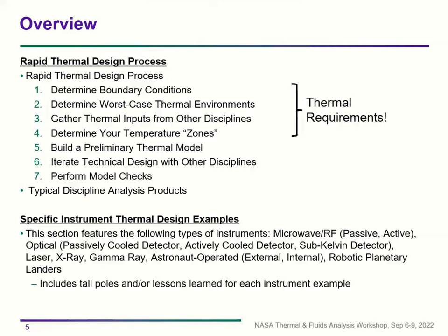Part two covers specific instrument thermal design examples across the electromagnetic spectrum — from the longest wavelengths with microwave and RF systems, to optical instruments, lasers, X-rays, and gamma rays at the highest frequencies and shortest wavelengths. The section concludes with guidelines on astronaut-operated instruments and robotic planetary landers.